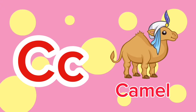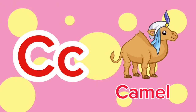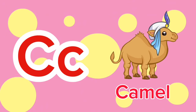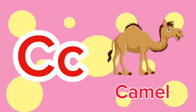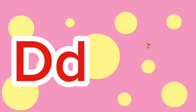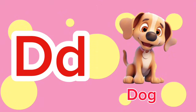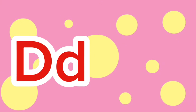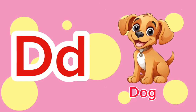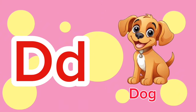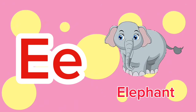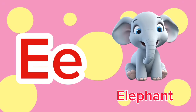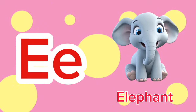C is for Camel. C-c-camel. C is for Camel. C-c-c. D is for Dog. D-d-dog. D is for Dog. D-d-d. E is for Elephant. E-e-elephant. E is for Elephant. E-e-e.